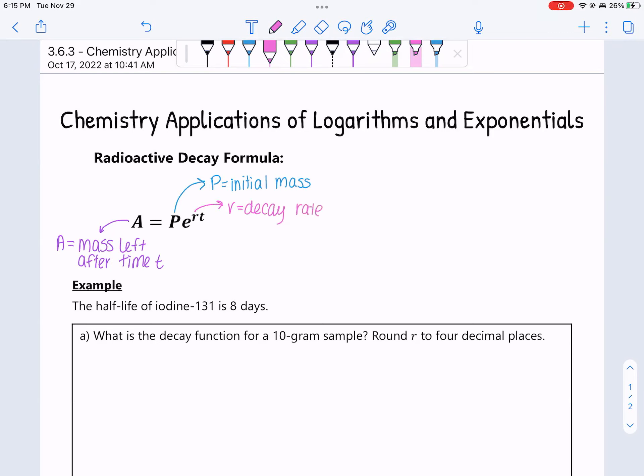R is the decay rate. And because this is radioactive decay, this should be a negative number because decay is a negative growth change. And in no surprise whatsoever, T is time.